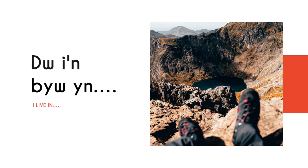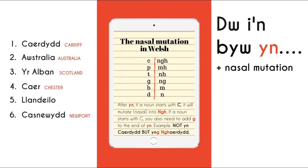And your answer would be, Dwi'n byw yn — and guess what? Yn, which means 'in', triggers a nasal mutation, not a soft mutation this time. Let's have a look at what happens. If you live in a place that starts with any of the letters in the left-hand side of the grid, that place name will need to mutate. In addition to this, if a place name begins with C, you'll also need to add the letter G to the end of yn.